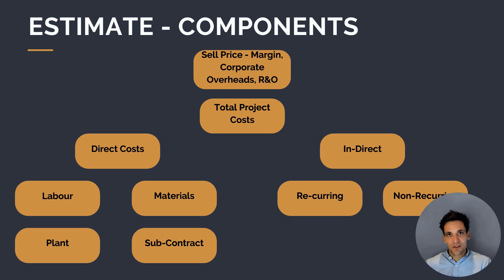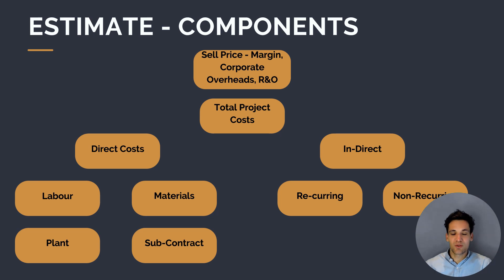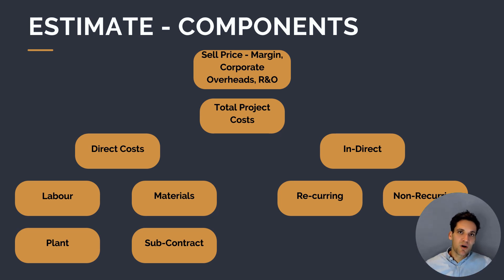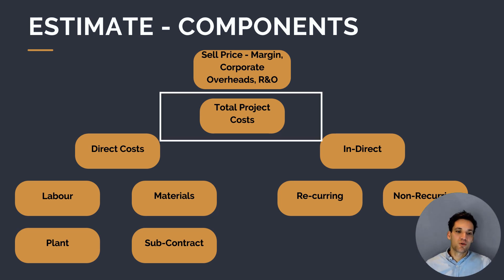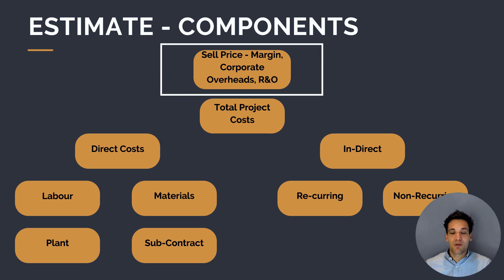Then we've got our indirect costs — the costs to manage and supervise the works. We can break these down into two key categories: non-recurring indirect costs, which are one-off costs such as setting up site facilities, and recurring indirect costs, which are ongoing costs throughout the duration of the project, such as the salary of the project manager overseeing the work. We combine our indirect and direct costs together to get our total project costs, and then to work out our sell price — what we charge our client — we add on our profit margin, any corporate business running overheads, and any risk and opportunity.